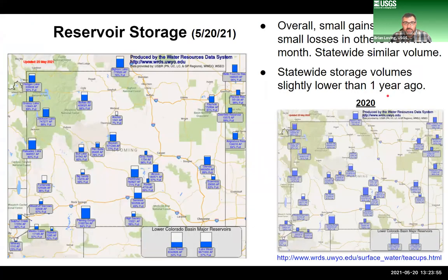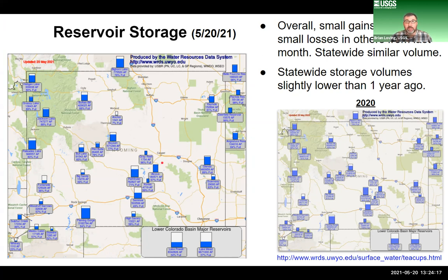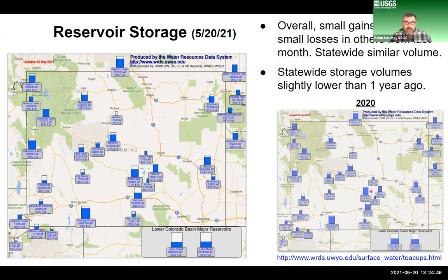Moving on to reservoirs with these teacup maps — the left shows conditions as of today, the right shows a year ago. Overall, some reservoirs have had small gains in capacity and some small losses, but similar volumes are stored statewide. Statewide, we're a little bit lower than we were a year ago. Some reservoirs are slightly higher, some slightly lower, but nothing significantly different from a year ago. Overall, we have a little bit less water being stored behind impoundments across the state.